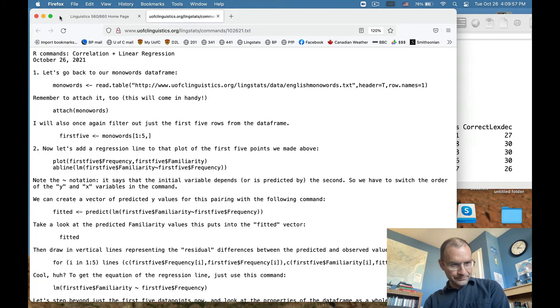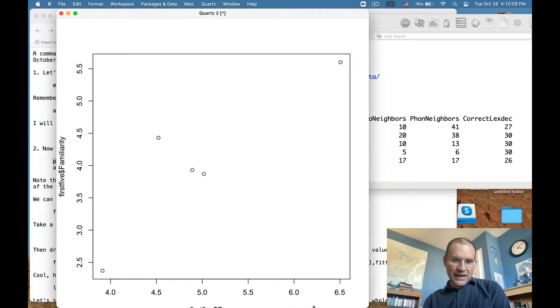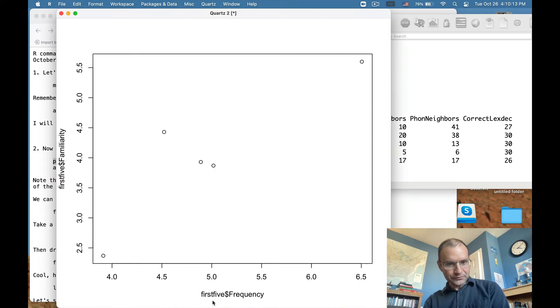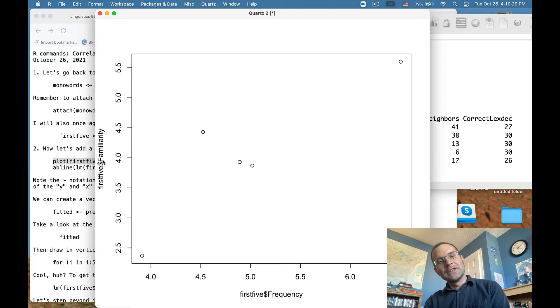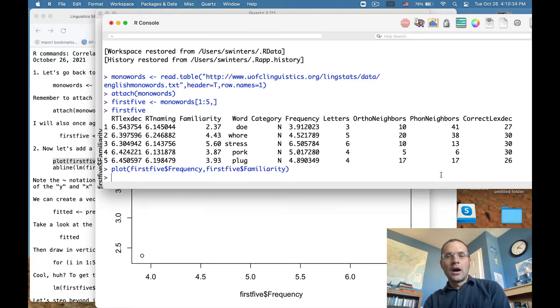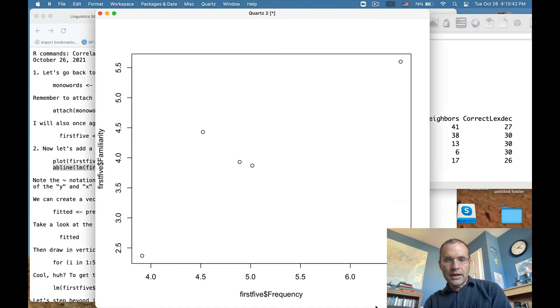So what I want to do is also go back and plot for these first five data points, the familiarity versus the frequency in a graph that looks like this, a scatter plot. On the x-axis, we have the frequency of the five individual words, and on the y-axis, we have the familiarity. So in this case, familiarity is operating as our y variable, and then frequency is going to operate as our x variable. So this is the dependent variable plotted here, and this is the independent variable plotted down here.